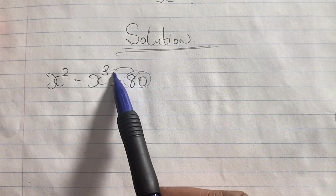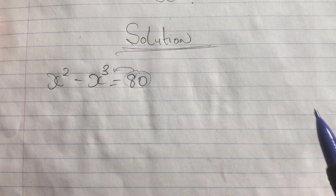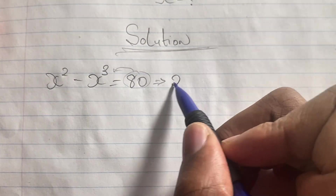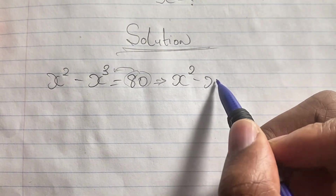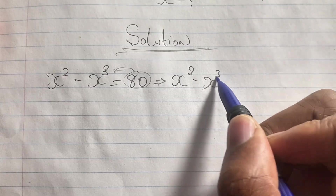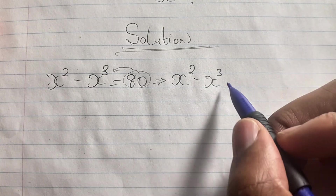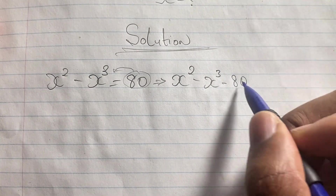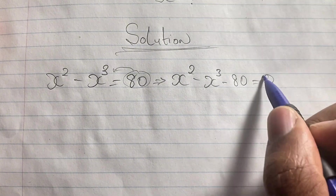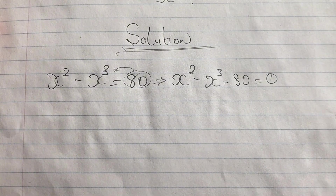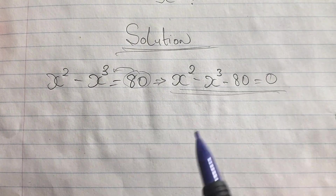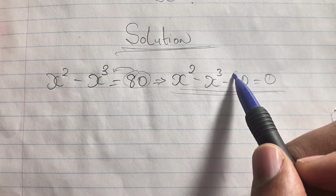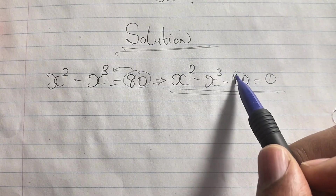We start to solve this equation by taking this 80 and bringing it to the left-hand side of our equation, where it now becomes a negative 80. So now we have x squared minus x cubed minus 80 equals zero.